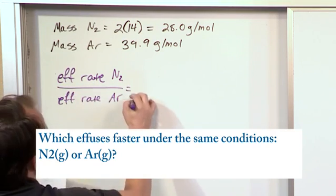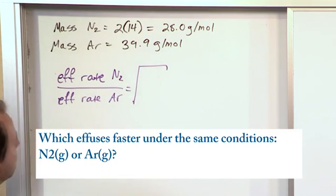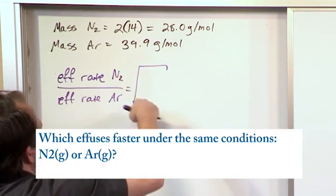What's that going to be equal? We know it's going to be the square root of the ratio of their molar masses, but if you remember, it's flip-flopped for the effusion rate.